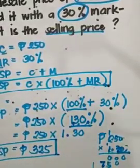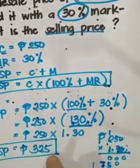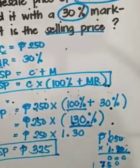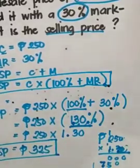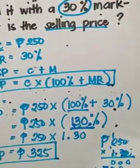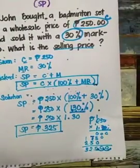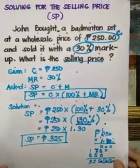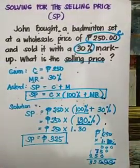So from the original cost which is 250, with a 30% markup, the selling price will be 325 pesos. That's how you solve for the selling price. Let's have another problem.